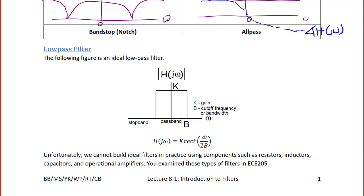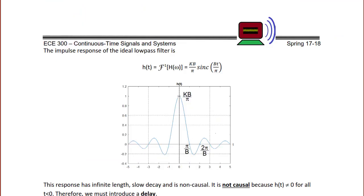In reality, an actual filter has to have a gradual transition as I showed in the prior sketches. It cannot just simply turn on or off. The transfer function and frequency response for this circuit would be H of J omega is equal to K rect of omega over 2b.